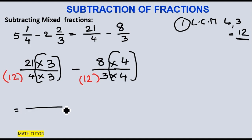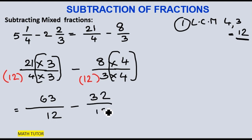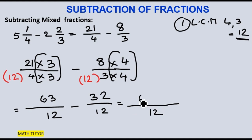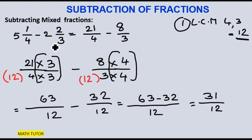Now let me proceed with the multiplication: 21 times 3 is 63 by 12, minus 8 times 4 is 32 by 12. It has now become a like fraction with the common denominator 12. Just subtract the numerators: 63 minus 32 is 31. So 31 by 12 is the answer.